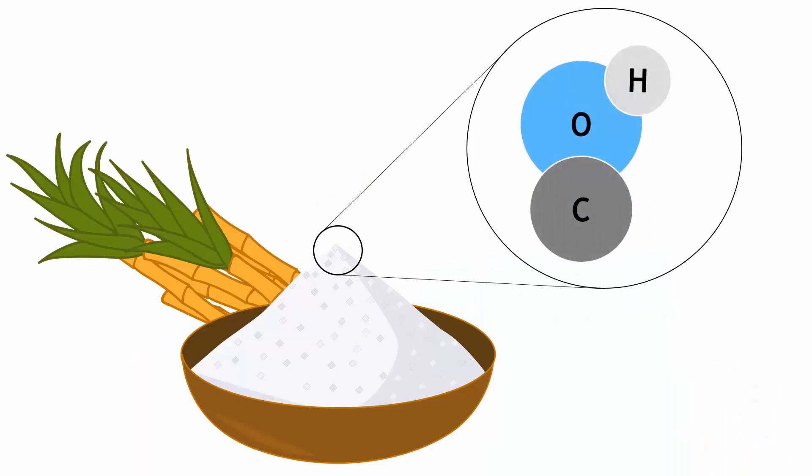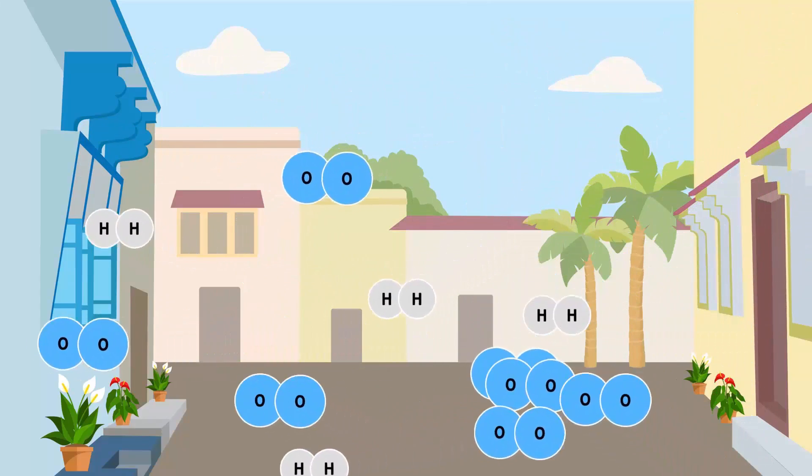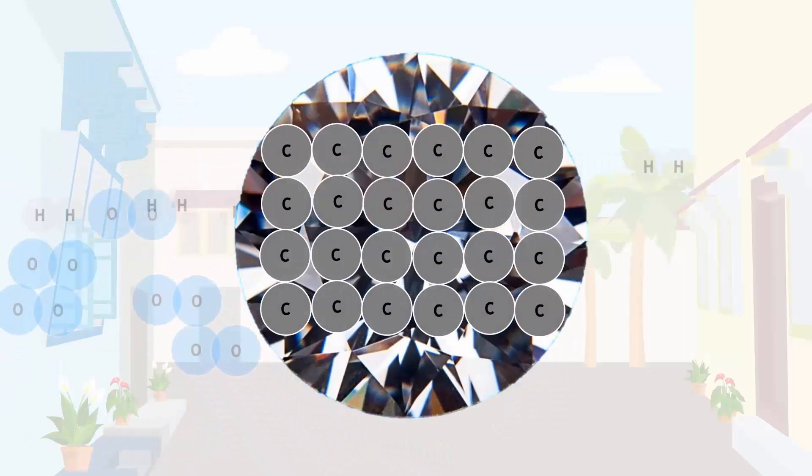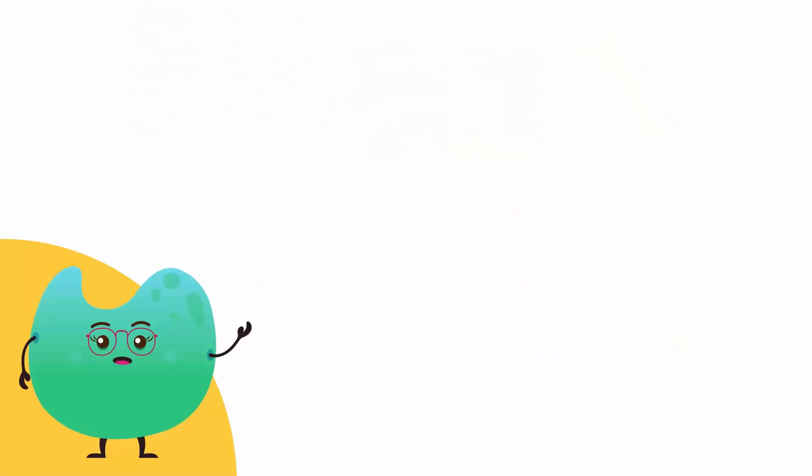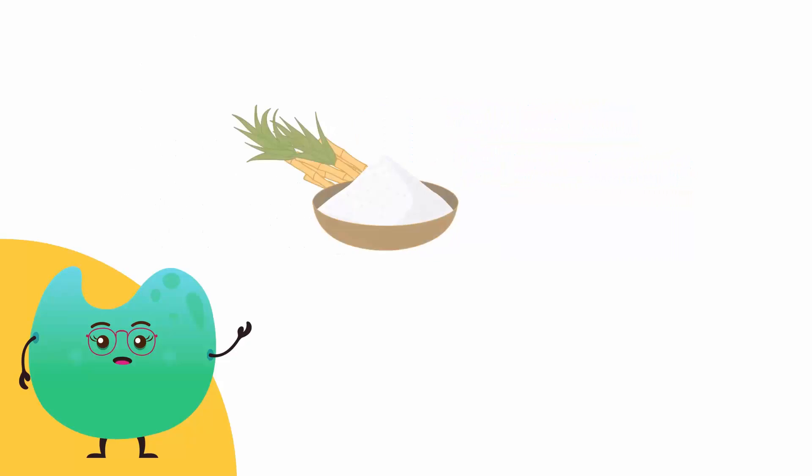On the other hand, we cannot separate the carbon, hydrogen or oxygen atoms present in sugar as easily. Hydrogen and oxygen are gases and carbon is found in diamonds. But none of these taste like sugar. When these elements are combined in a fixed ratio, sugar is formed.